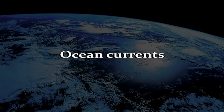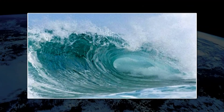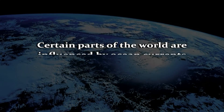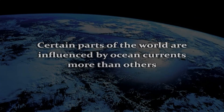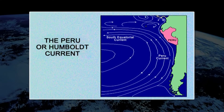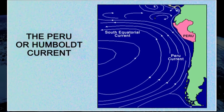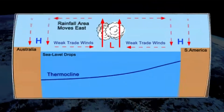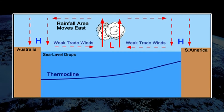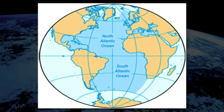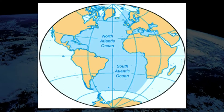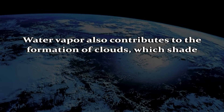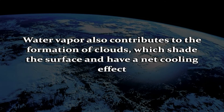Ocean currents move vast amounts of heat across the planet, roughly the same amount as the atmosphere does. Certain parts of the world are influenced by ocean currents more than others. The coast of Peru and other adjoining regions are directly influenced by the Humboldt current that flows along the coastline of Peru. The El Niño event in the Pacific Ocean can affect climatic conditions all over the world. Another region strongly influenced by ocean currents is the North Atlantic. Much of the heat that escapes from the oceans is in the form of water vapour, yet water vapour also contributes to the formation of clouds which shade the surface and have a net cooling effect.